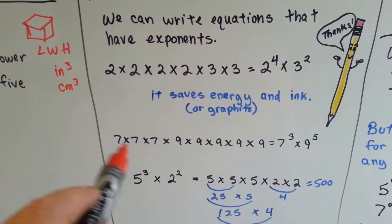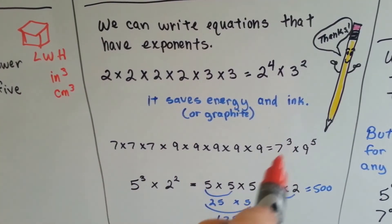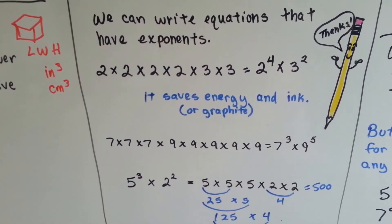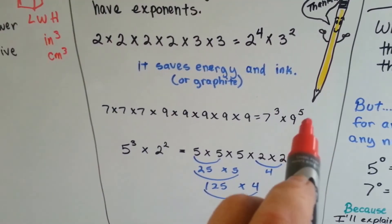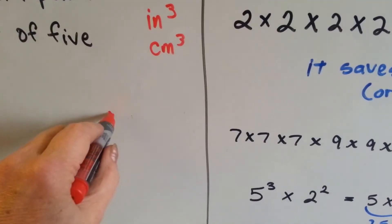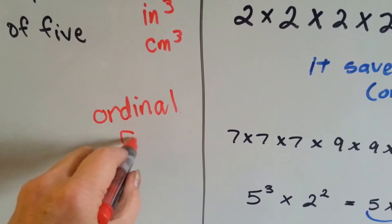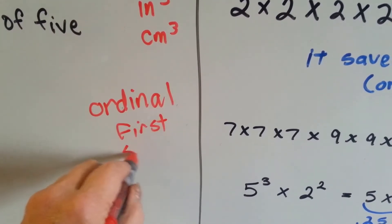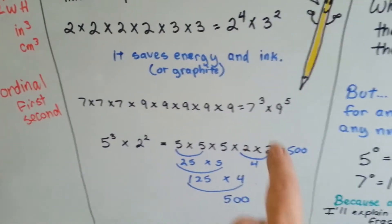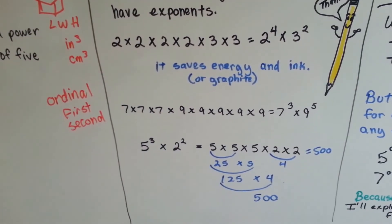If we have three 7's — 7 times 7 times 7 — we have 7 cubed, or 7 to the third power. And if we've got five 9's, that's 9 to the fifth power. We use ordinal numbers, like the ones used for grades in school — 1st, 2nd, 3rd — those are ordinal numbers, and those are the numbers we use for the powers: 1st power, 2nd power, 3rd power, 4th power, 5th power.